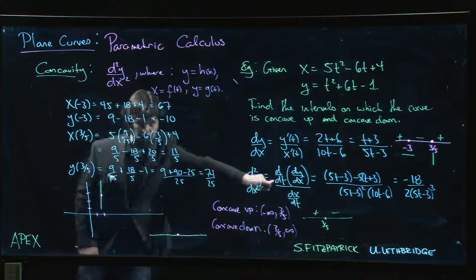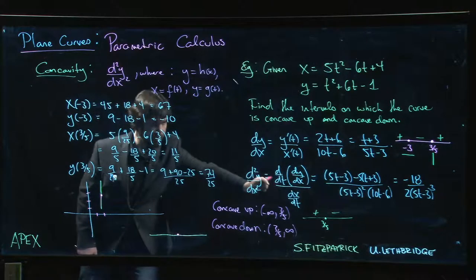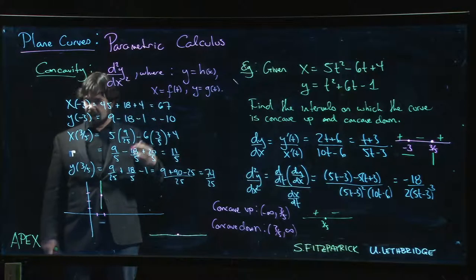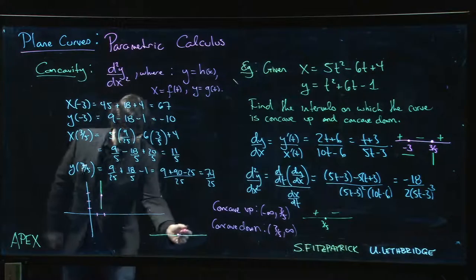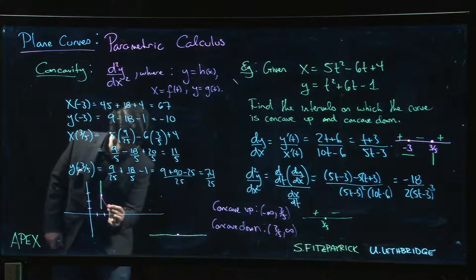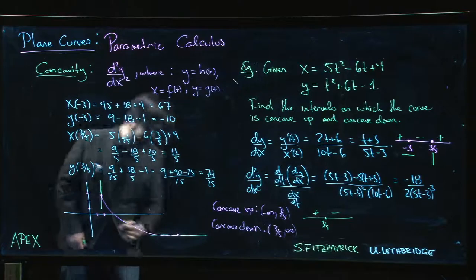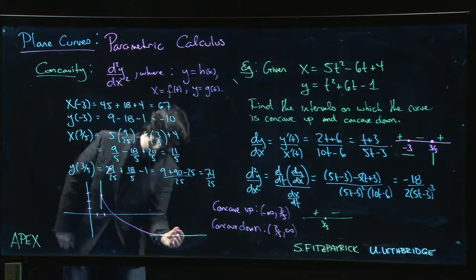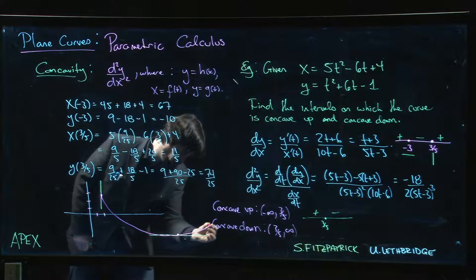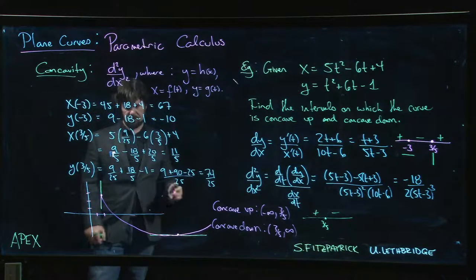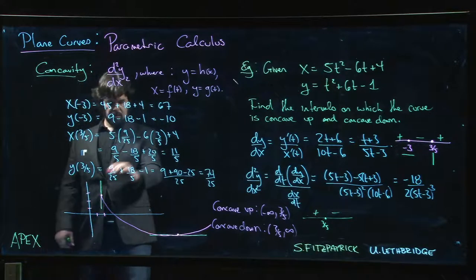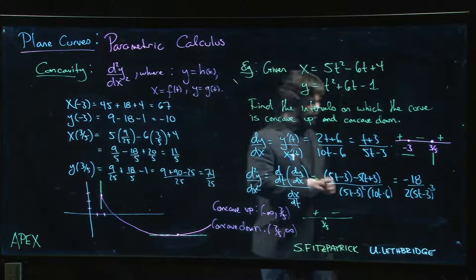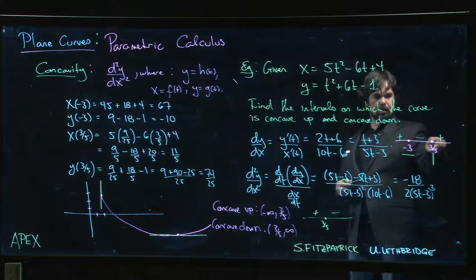But you know, just so happens that just because t is increasing doesn't mean x is necessarily increasing. So we actually get something like that, and then we hit a minimum and we start increasing again. Like that, stays concave up, we hit that vertical tangent.